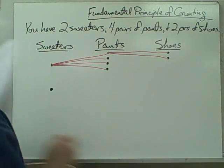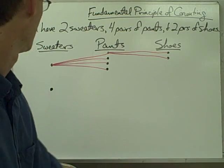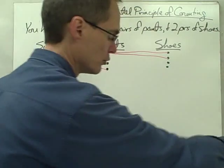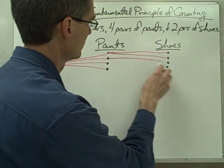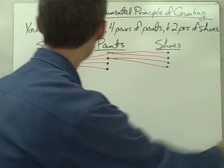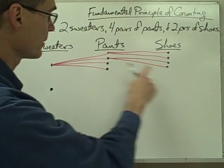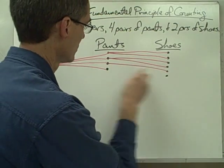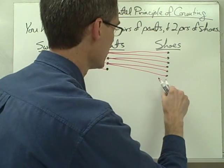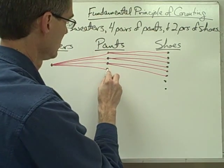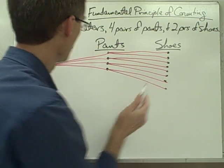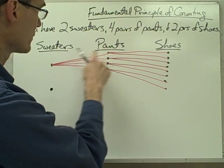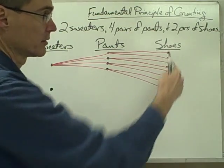And now if I keep on doing this kind of matching up, I could take this sweater and match it up with the second pair of pants, and again these same two pairs of shoes. I could take my sweater — this first sweater — and this third pair of pants, and again match it up with my two pairs of shoes. Then for this first sweater, I can match it up with all four pairs of pants, and each one of those combinations I can match up with two different pairs of shoes.